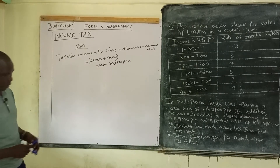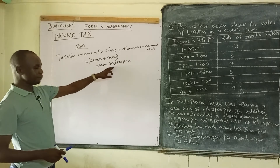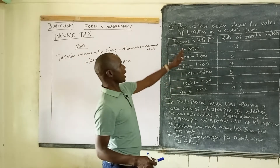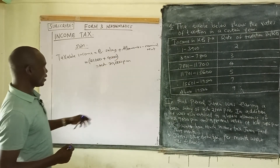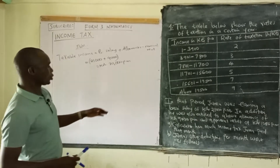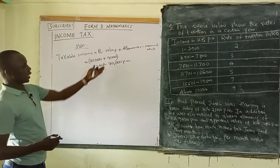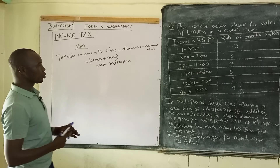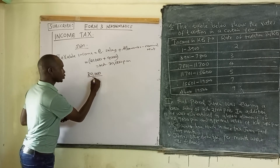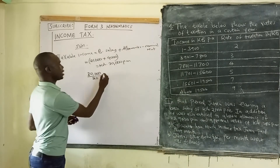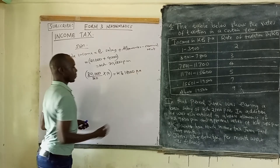Since the tax table is in Kenyan pounds per annum, we must convert our figure. We take 30,000 shillings per month, divide by 20 to convert to Kenyan pounds, then multiply by 12 to get the annual figure. This gives us 18,000 Kenyan pounds per annum. We then go to the table to identify which tax brackets this amount falls into. 18,000 lies between 15,601 and 21,500, so it is not all contained in the first bracket.